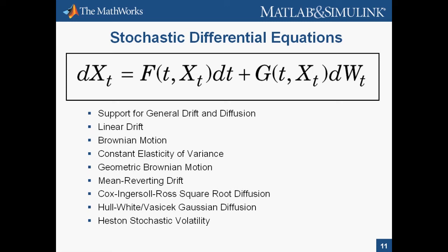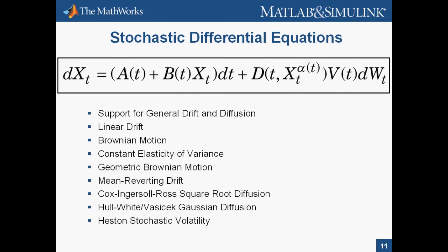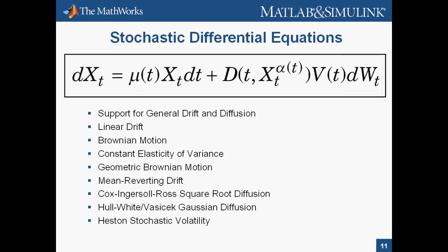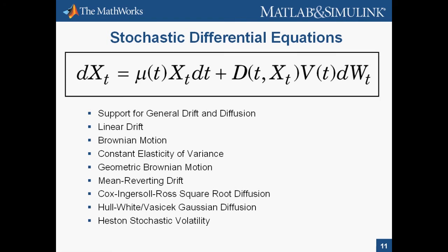If one wants to use one of the predefined models, one would call the constructor for that model with the required input parameters, which are not functions of X anymore. For example, for the linear drift model, now illustrated on the slide, one would call the model constructor with parameters a, b, alpha, and v. Or, in the case of a Brownian motion, one would only need to define parameters mu and v. And you can see the equations for the rest of the models mentioned on the slide.